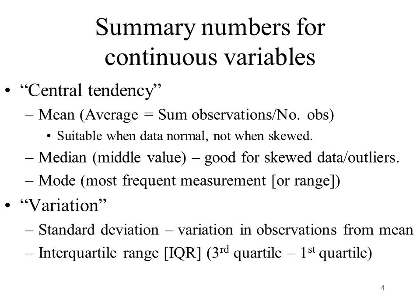You can also talk about variation. You've probably heard the term standard deviation before — there's a complicated formula that you don't need to know. You just need to know that the standard deviation is the variation in observations from the mean. When the data is skewed or has outliers, instead of using the standard deviation we use what's called the interquartile range, or IQR. This is the third quartile minus the first quartile, or the 75th percentile minus the 25th percentile.